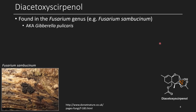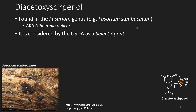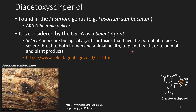The next one we're going to talk about is diacetoxyscirpenol. It's found in the Fusarium genus, and it's also considered by the USDA as a select agent — meaning biological agents or toxins that have the potential to pose a severe threat to human and animal health, plant health, or animal and plant products. This structure looks quite similar to T2; the only difference is we don't have an ester group sticking off.